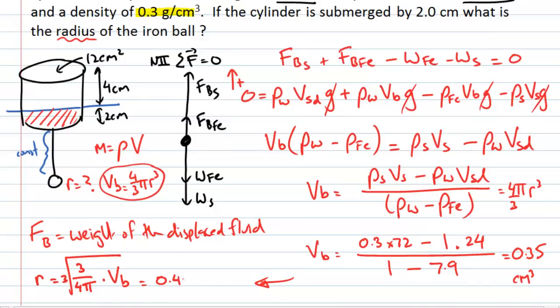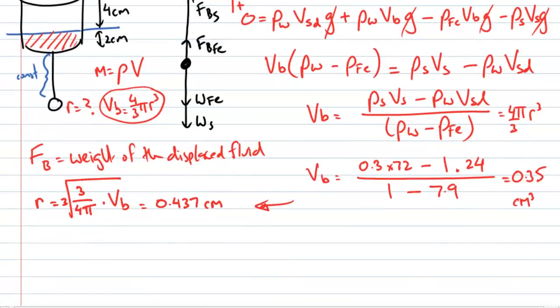Let's quickly check this by changing one parameter: suppose we use a uranium ball instead of iron, keeping the system in equilibrium with the styrofoam still submerged by 2 centimetres. A higher density makes the denominator a bigger number, so the volume of the ball must decrease — a smaller ball for a bigger density. That makes sense. If you understand the concepts, try problem 51 in chapter 15 to consolidate your understanding of the buoyant force applied to a composite system.